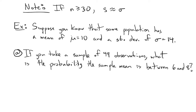I want to make a little note that should have been in the last video, but there's one more thing that's important. With the central limit theorem and sampling distributions, when you have a large sample — n greater than or equal to 30 is a good, commonly used cutoff — the sample standard deviation is close enough to the population standard deviation that you can use one to estimate the other.